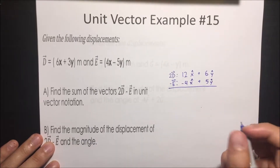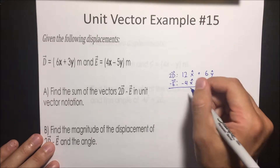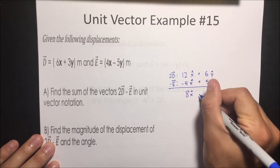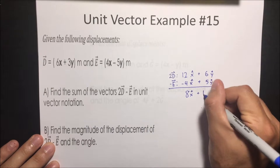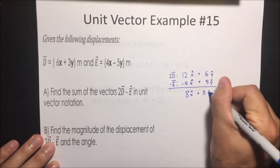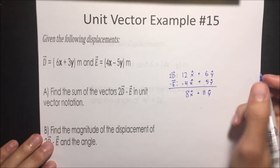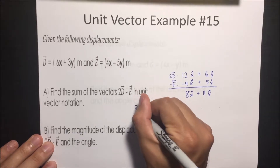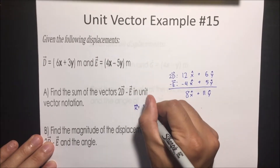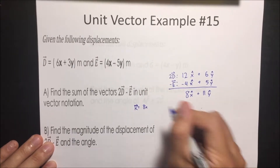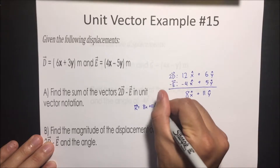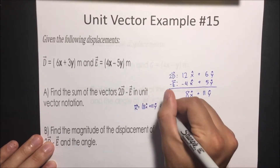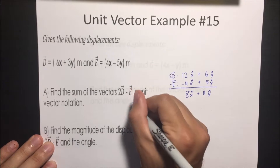When we add these two together, we get a vector of 8 in the x direction and 11 in the y direction. So our resultant vector is equal to 8x̂ + 11ŷ meters.